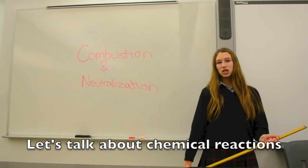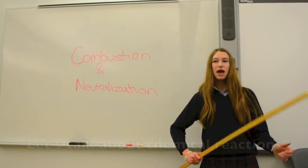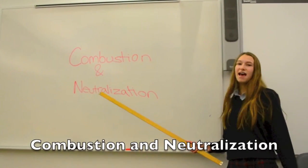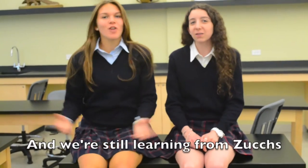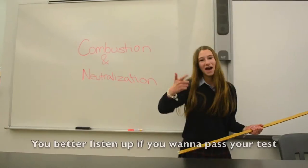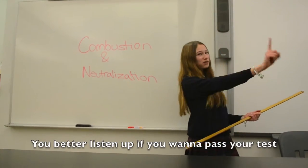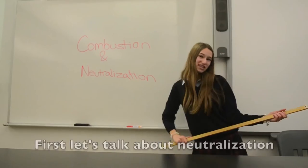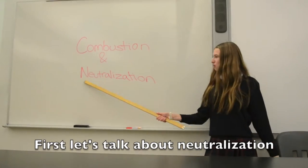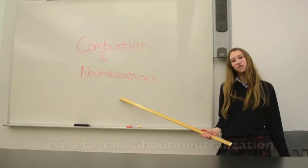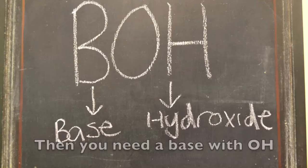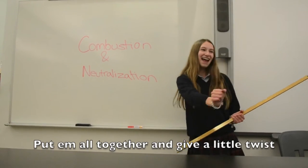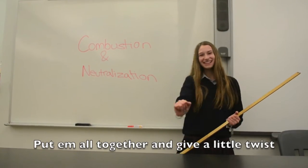Let's talk about chemical reactions, combustion and neutralization. And we're still learning — you better listen up if you want to pass your test. First let's talk about neutralization. First we need an acid with hydrogen particles. Then you need a base with OH, put them all together and give a little twist.